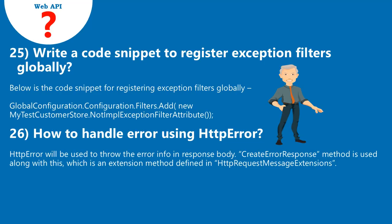Question 25: Write a code snippet to register exception filters globally. Below is the code snippet for registering exception filters globally: GlobalConfiguration.Configuration.Filters.Add(new MyTestCustomerStore.NotImplementedExceptionFilterAttribute()).